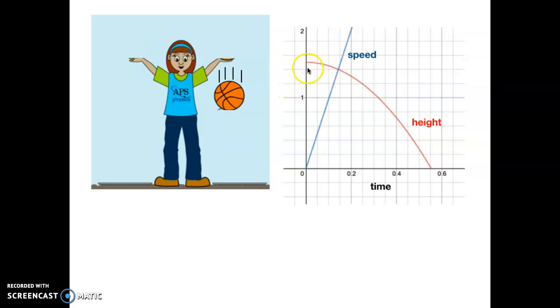Looking at our graph here, height decreases quadratically while speed increases linearly. So if we were to add speed plus height, we would not get a constant value. They change at different rates.